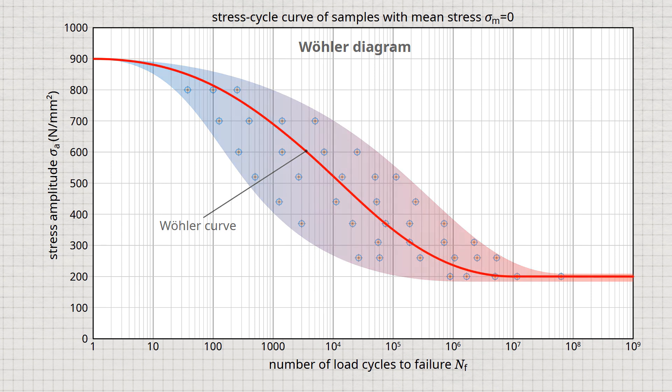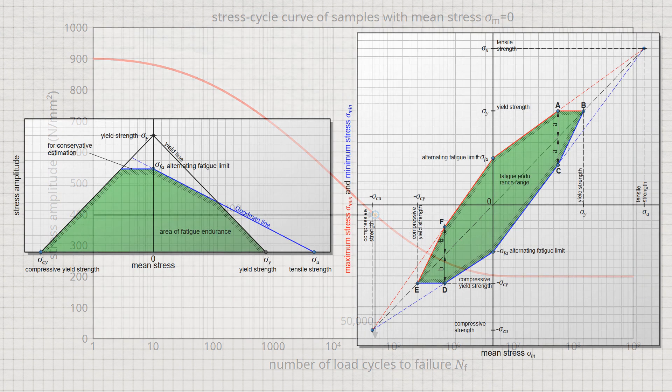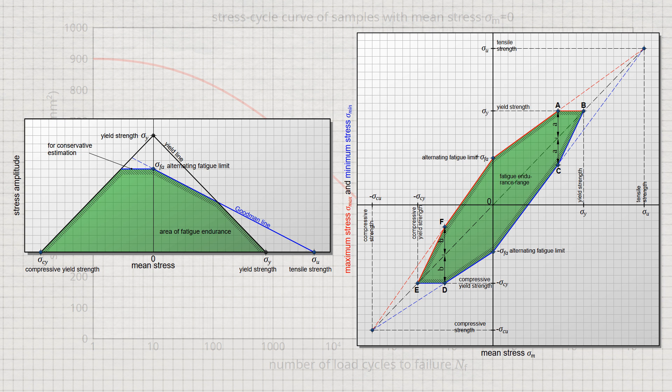For the aforementioned case of a 50% probability curve, this would mean that with a stress amplitude of 400 N per square millimeter, half of all samples would withstand 50,000 load cycles. Note that the Wöhler curve is only used for the evaluation of fatigue tests. For the engineer, however, such a diagram is of little interest since the Wöhler diagram is valid only for a single mean stress. Therefore, special fatigue limit diagrams are created. Of particular importance are the Haigh diagram, also called the Goodman diagram, and the Smith diagram.